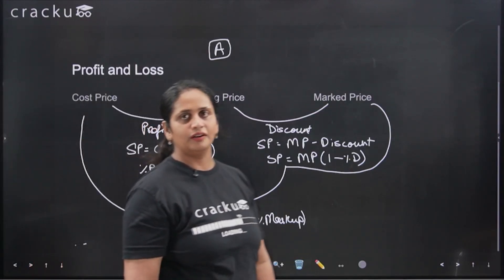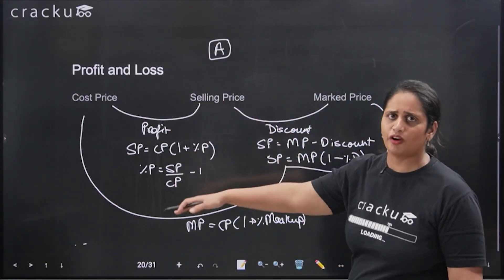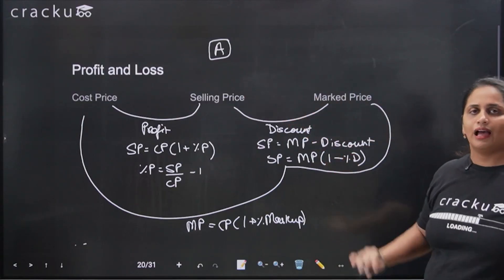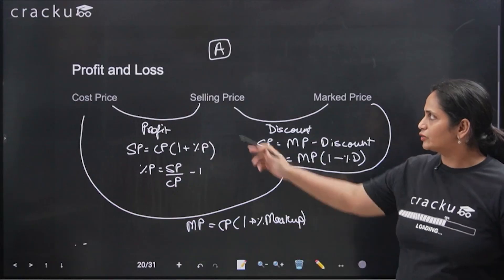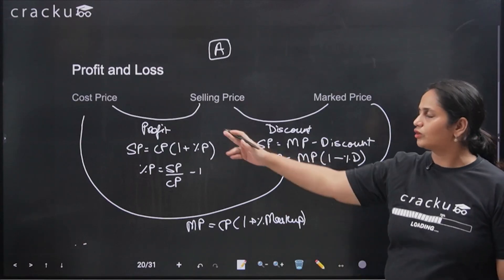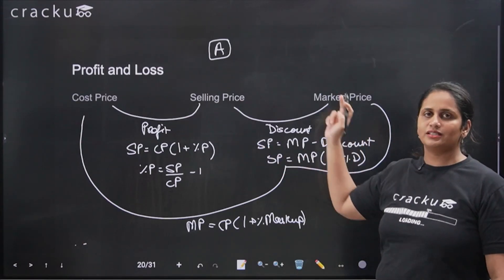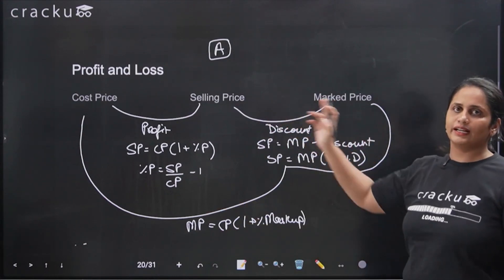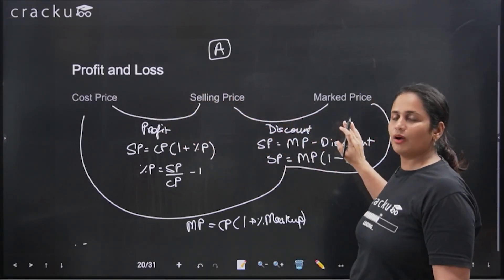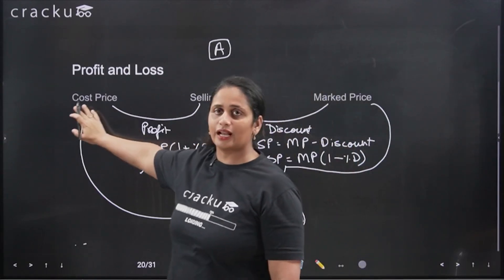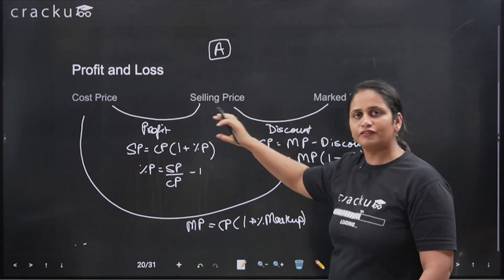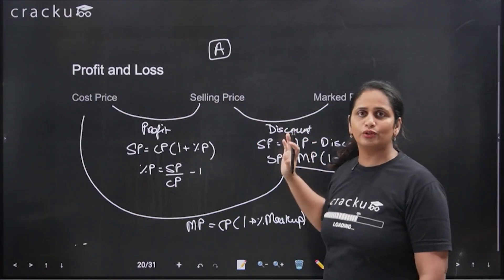From these relationships you get percentage profit, percentage loss, discount, and markup — all are just interconnections between the three prices. You should be very comfortable with this flow and these equations. If you are given cost price, mark price, and percentage discount, you can calculate selling price from discount, then calculate percentage profit. You just need enough variables to find the missing values. All these interconnections you should know very well.